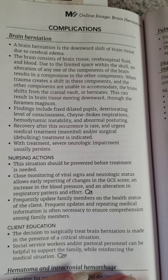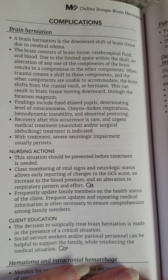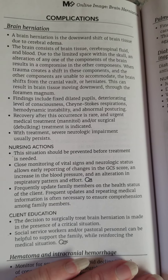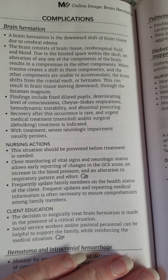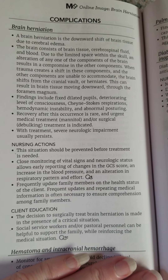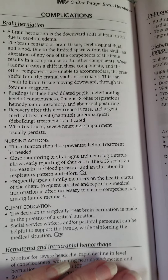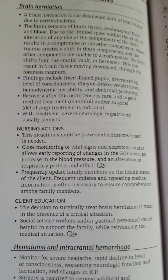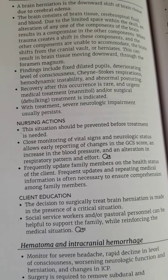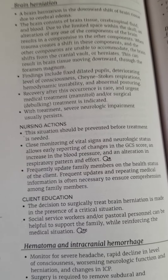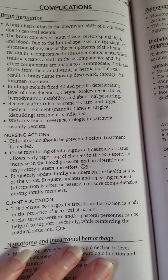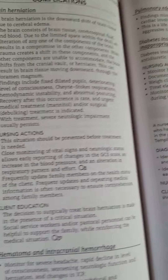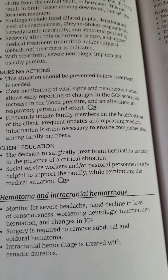Findings of brain herniation include fixed dilated pupils, deteriorating level of consciousness, Cheyne-Stokes respirations, hemodynamic instability, and abnormal posturing. Recovery after this occurrence is rare. Urgent medical treatment with mannitol and or surgical debulking is indicated. With treatment, severe neurologic impairment usually persists.